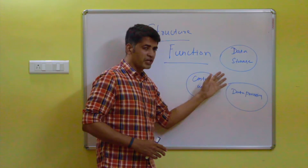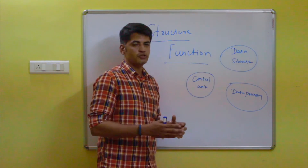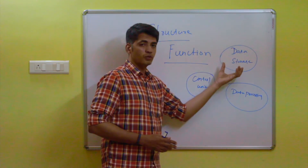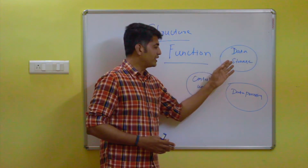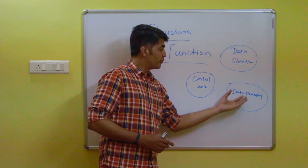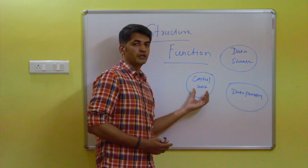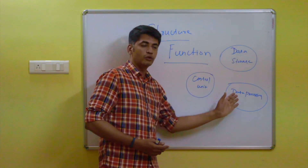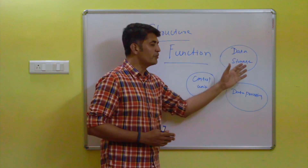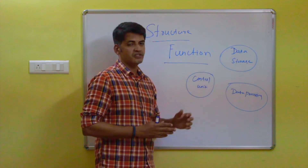Function means how each operational unit is functioning inside the structure. For example, what is meant by data storage — how data storage will happen, where the data comes from, and where the data will be moved. For data processing, where the data is taken and after processing where it will be moved. For the control unit, how it gives control signals to both data storage and data processing. This is all about the function of each component or operational unit inside the structure of a particular system.